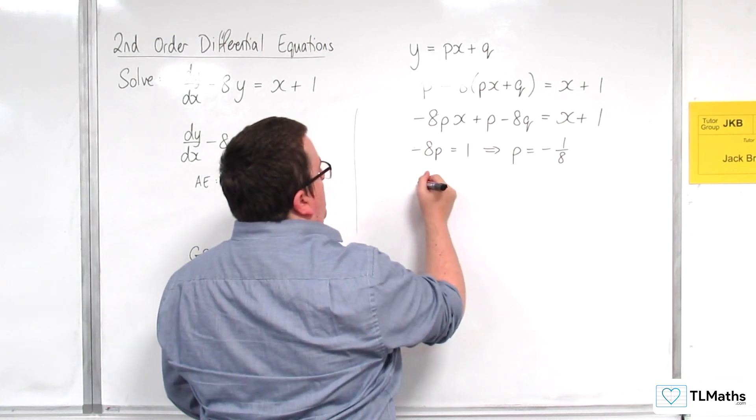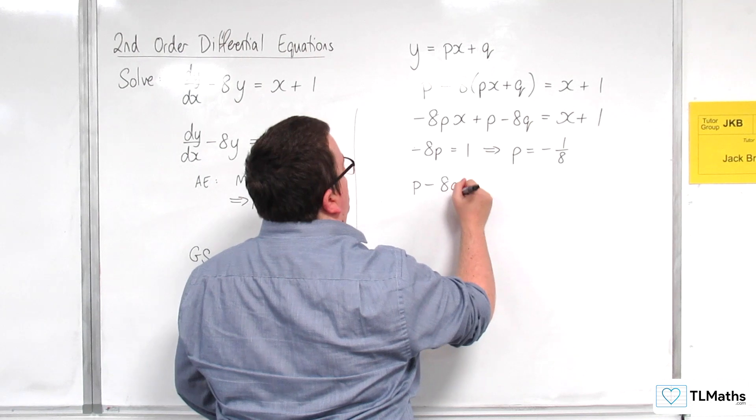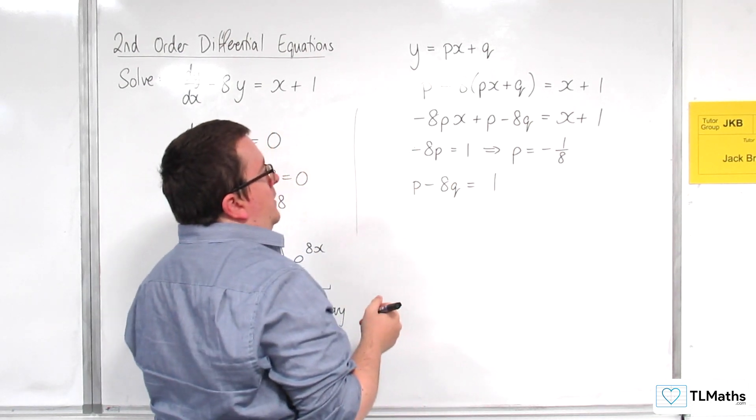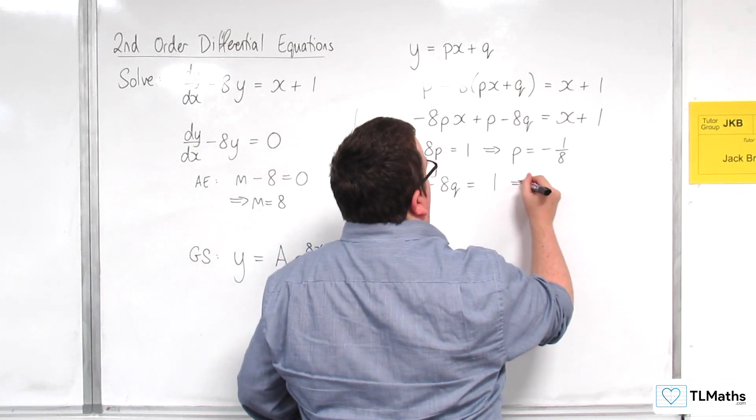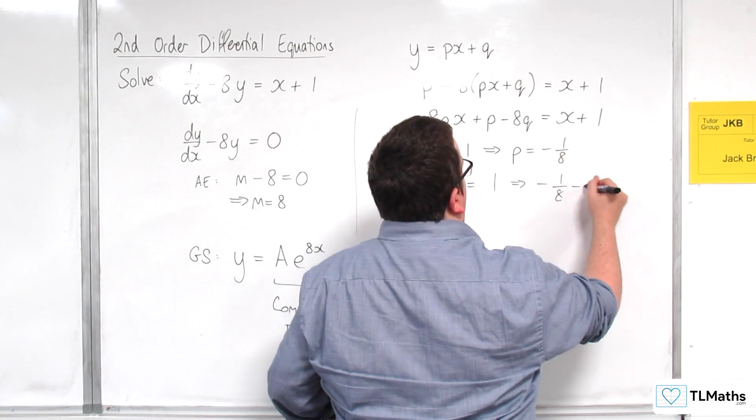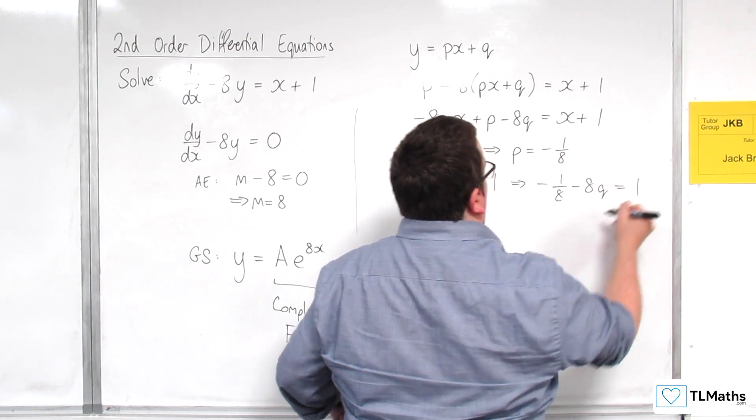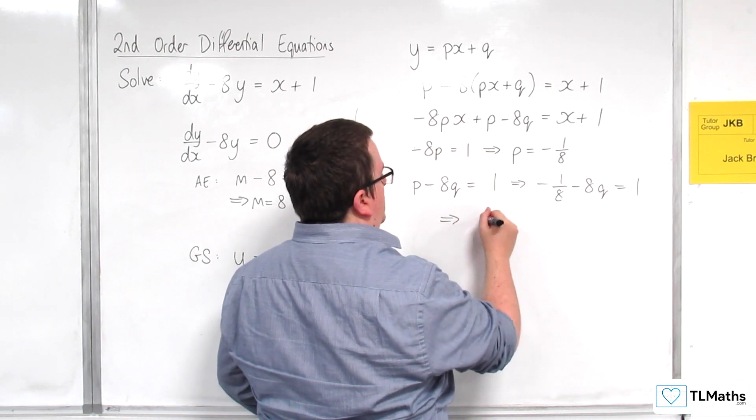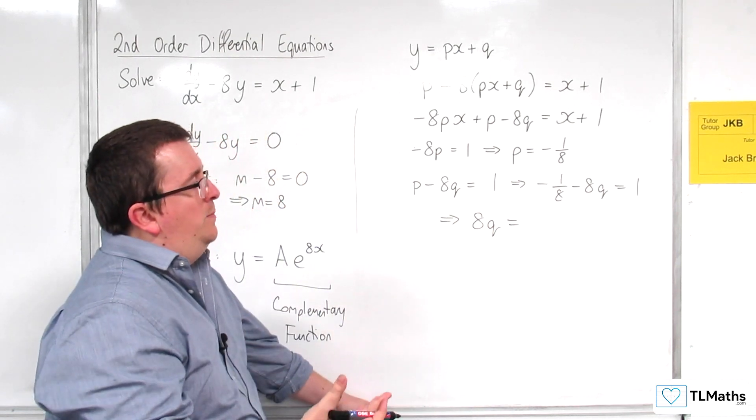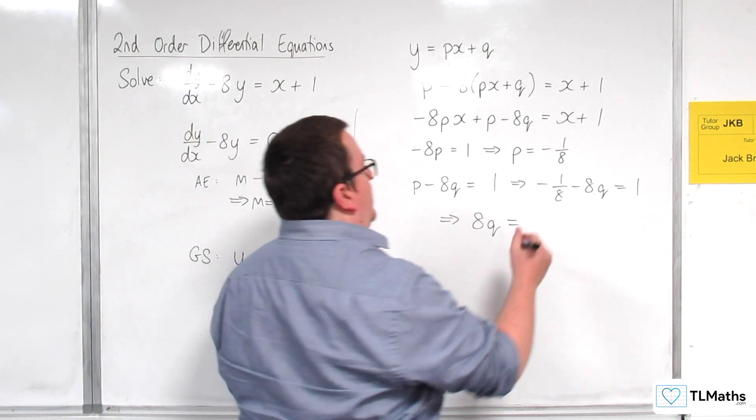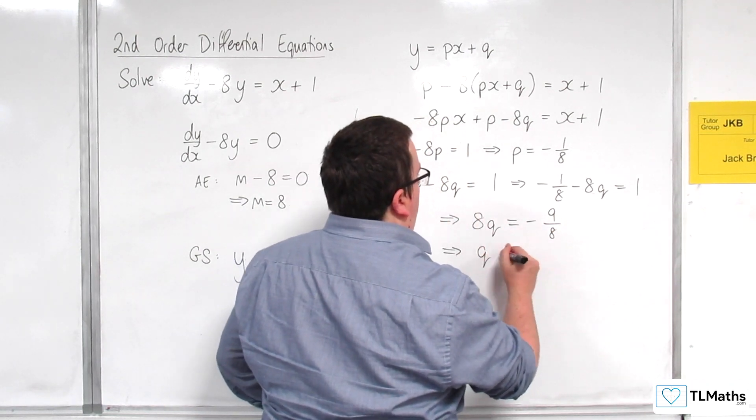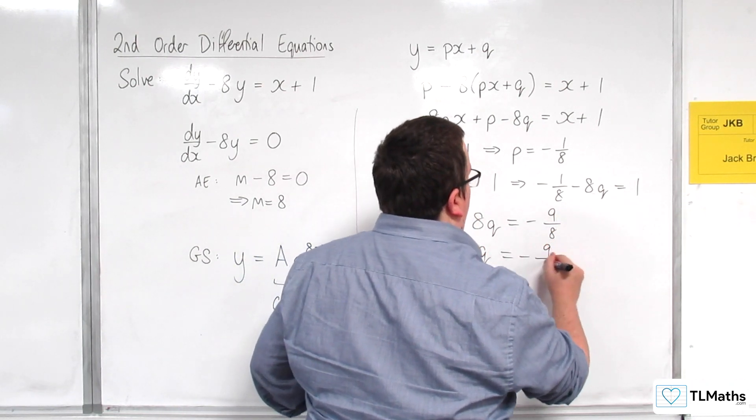I also know that p take away 8q has got to be equal to 1. So that's got to be equal to 1. So that implies that because p is minus 1 eighth, we've got minus 1 eighth take away 8q is equal to 1. Okay. So if I add 8q to both sides, subtract 1 from both sides, I get minus 9 eighths. So that means that q is going to have to be equal to minus 9 over 64.